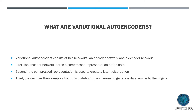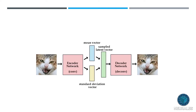Let's talk about variational auto-encoders. They consist of two networks: an encoder network and a decoder network. The encoder network learns to take in the original data and learns a compressed representation of that data. That compressed representation is then used to create a distribution, which you can think of as living in some high-dimensional space. A decoder then samples from this distribution and learns to generate data that's similar to the original data. Let's look at a picture, because a picture is worth a thousand words.